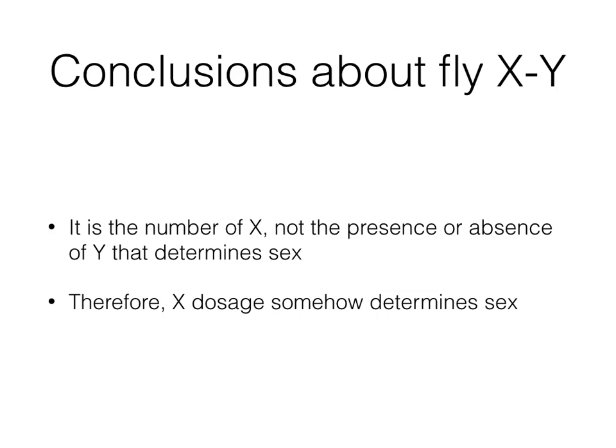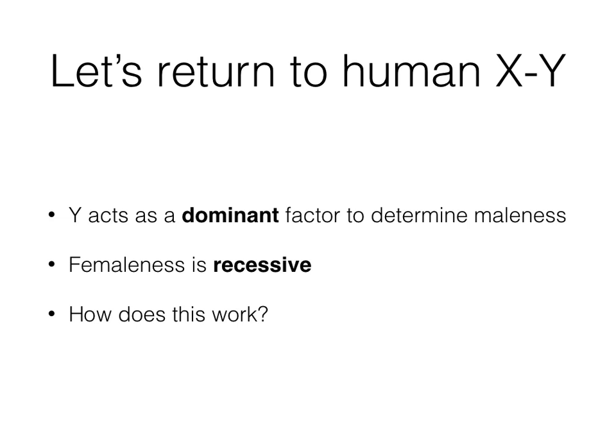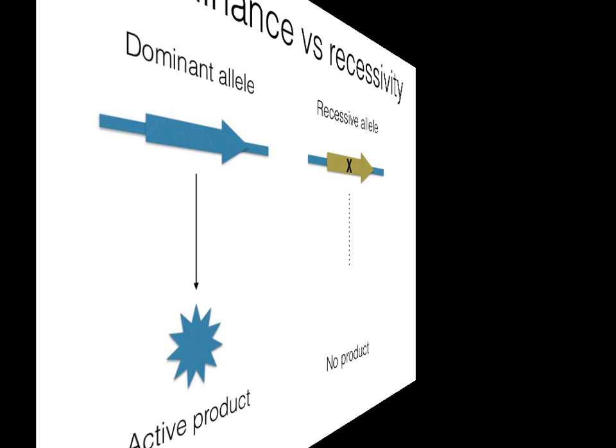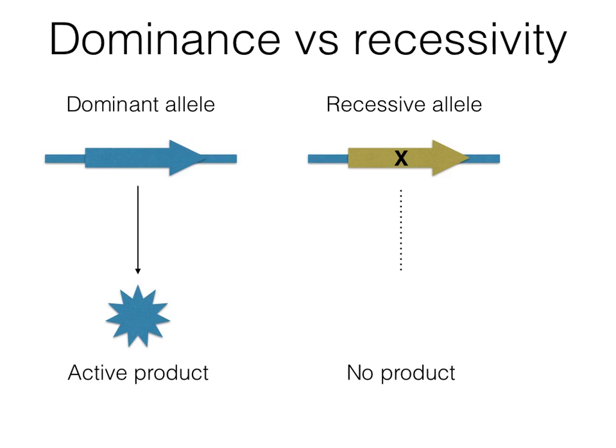Let's get back to humans and their XY chromosomes. If Y acts in a dominant fashion to determine maleness and the female trait is recessive, how does it work? Typically, dominant action of a genetic factor implies an active product, while recessive action is often associated with no product or a weak product. So, dominance of Y implies that a Y-encoded gene produces a product.